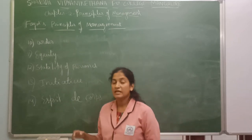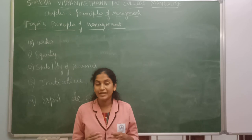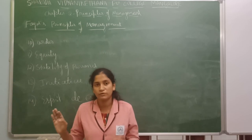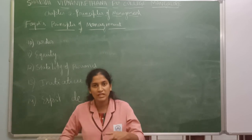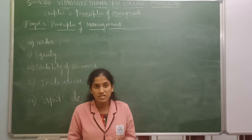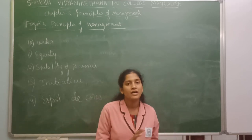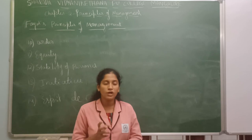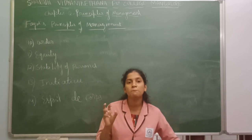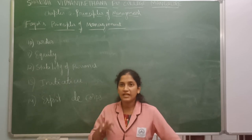Next we have stability of personnel. Fayol tells that once a person joins the business, make them stay for at least a minimum period of time. If people keep coming and going, it takes a lot of energy — we have to train them, they have to adjust to the organization, and we have to make them understand how to work. It is a waste of time. Stability of tenure means making people stay for at least a minimum period, getting them trained so that work goes smoothly.